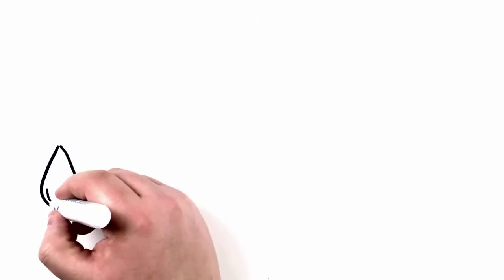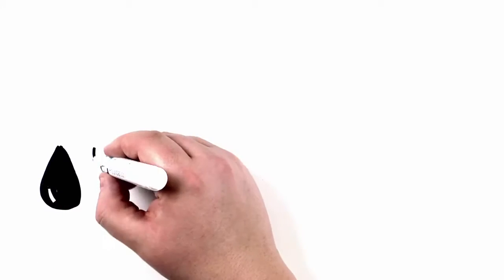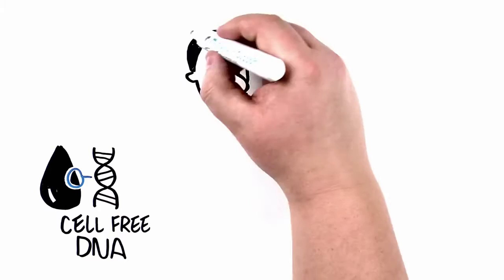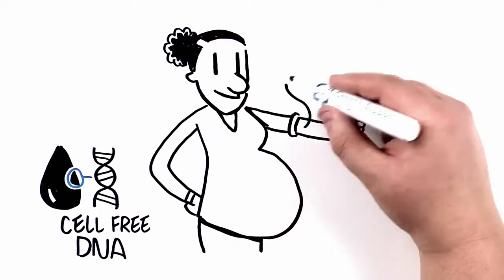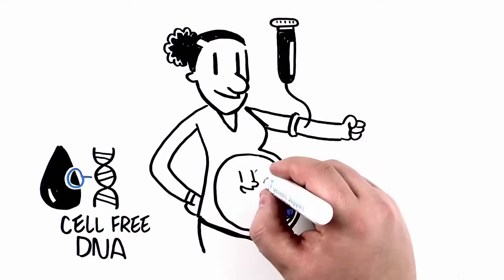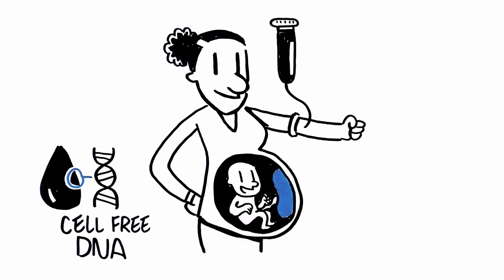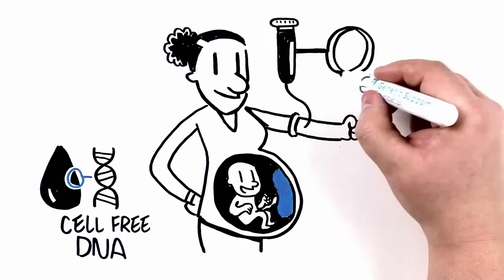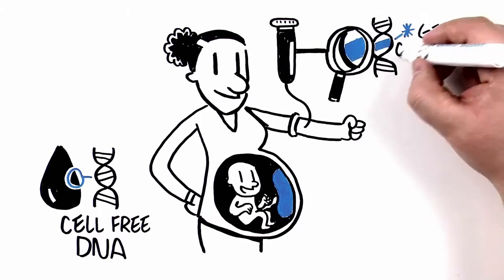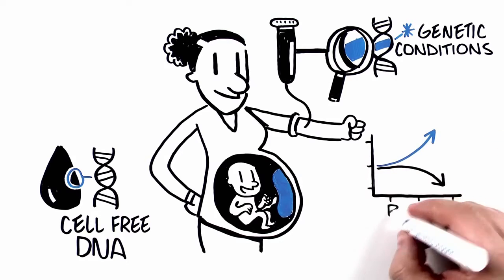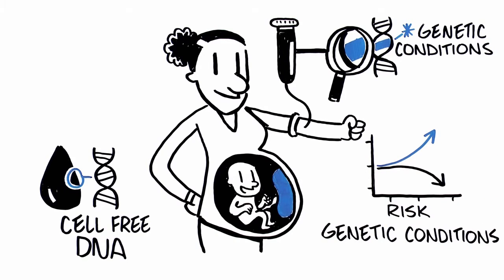How does NIPT work? Our blood contains fragments of our DNA, known as cell-free DNA. When a woman is pregnant, her blood will also contain DNA fragments from the placenta, which has a genetic makeup that is usually identical to that of the developing baby. By analyzing this DNA in mom's blood, it can be determined if there is an increased or decreased chance for certain genetic conditions.